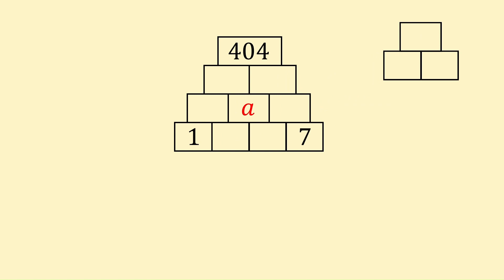The rule is that each block is the sum of the two numbers below it. For example, blocks of 2 and 5 on the bottom will give 7 on the top. Using this information, what is the value of A in this number pyramid?